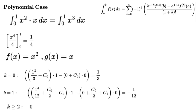Derivatives of g: g(x) equals x, g prime(x) equals 1, g to the power of k of x equals 0 for k greater than or equal to 2. For k equals 0: 1 cubed over 3 plus c₀ times 1 minus (0 plus c₀) times 0 equals 1 over 3. For k equals 1: negative 1 times (1 to the power of 4 over 12 plus c₀ over 2 plus c₁) times 1 minus (0 plus c₀ over 2 plus c₁) times 0 equals negative 1 over 12.